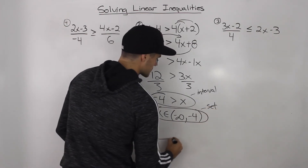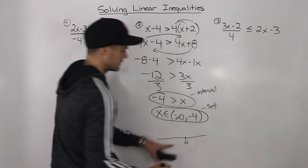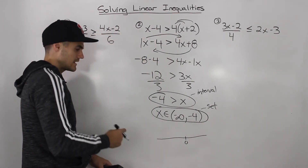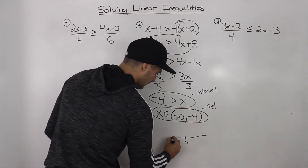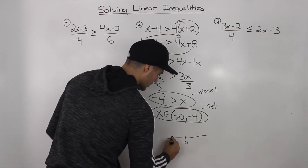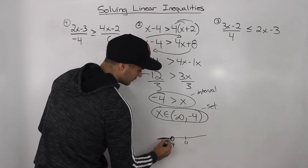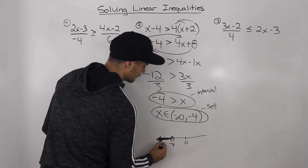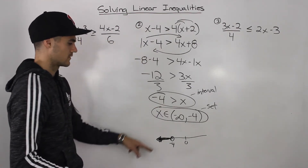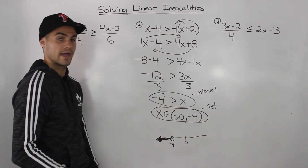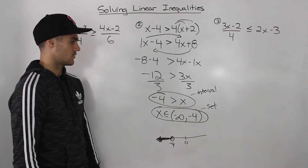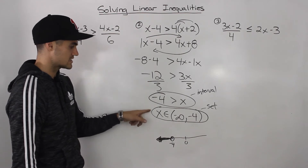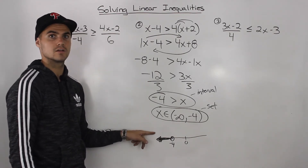We can also express this with a number line. If we have a number line with a value of zero, when is x less than negative 4? This is going to be negative 4 here, but we have an open circle — because it's not less than or equal to negative 4, it's just less than negative 4. So there's going to be an open dot at negative 4. So three different ways to express the answer: interval notation, set notation, and a number line.